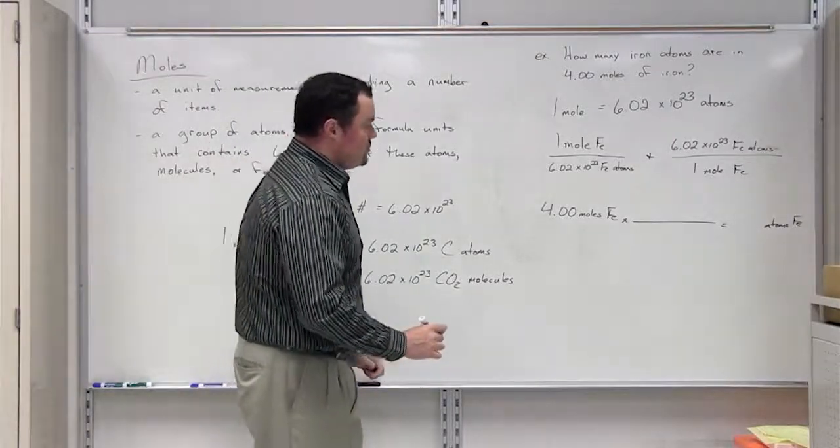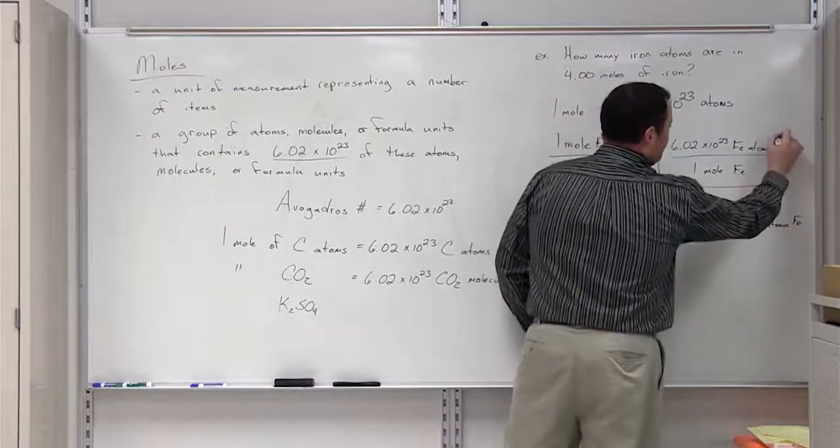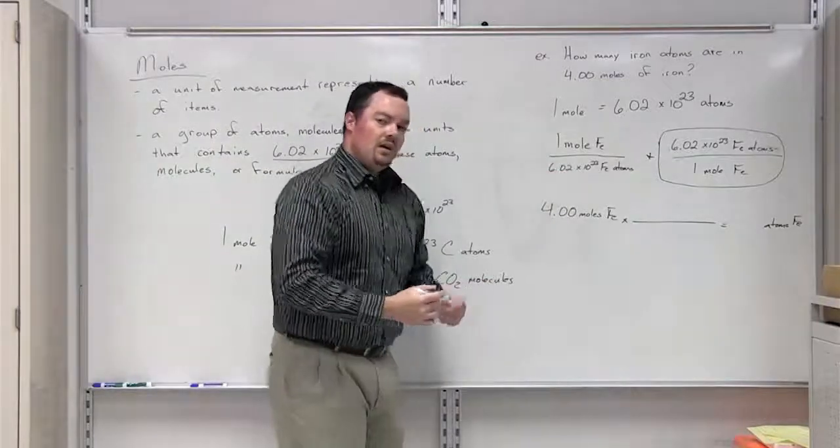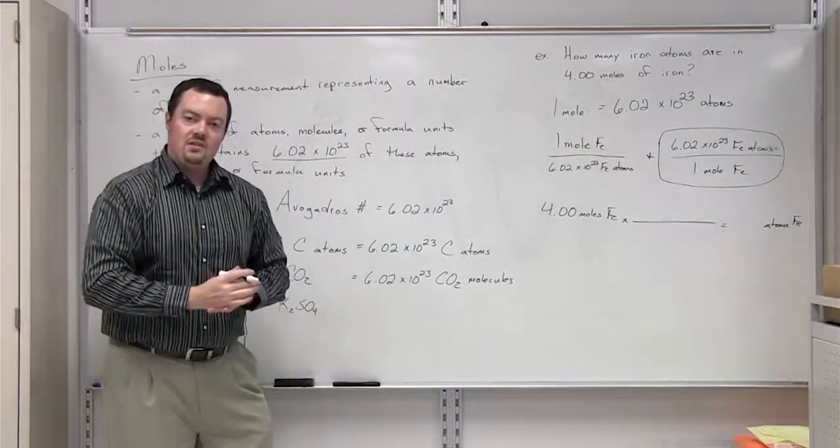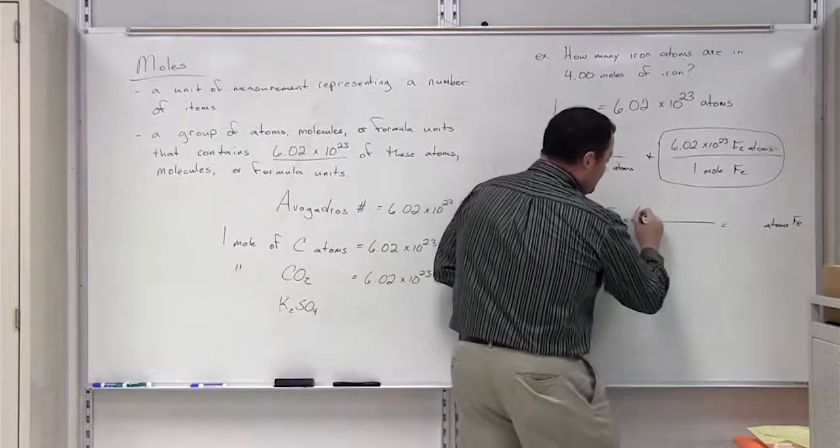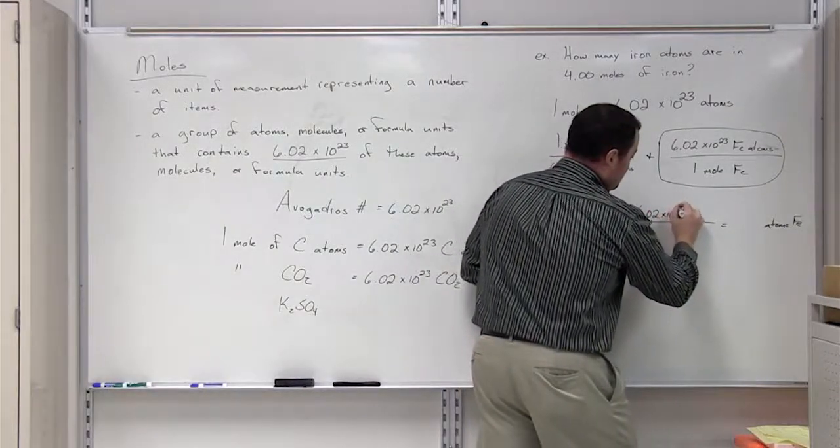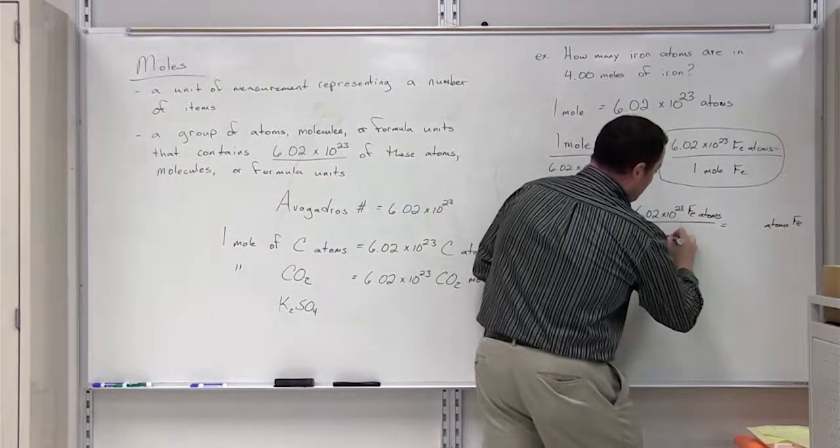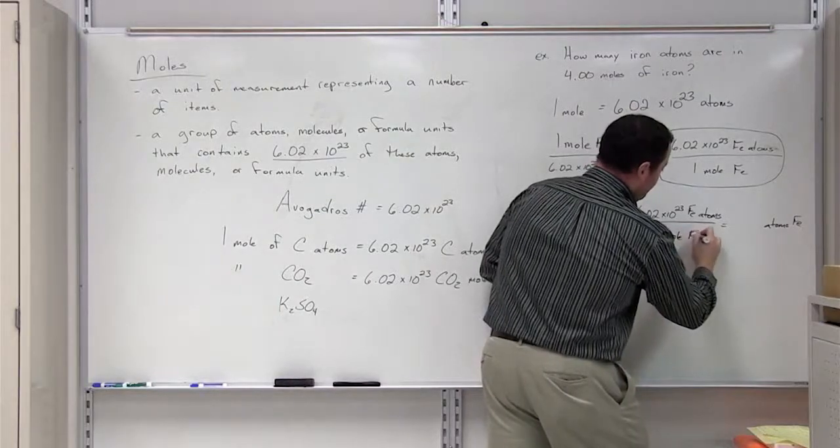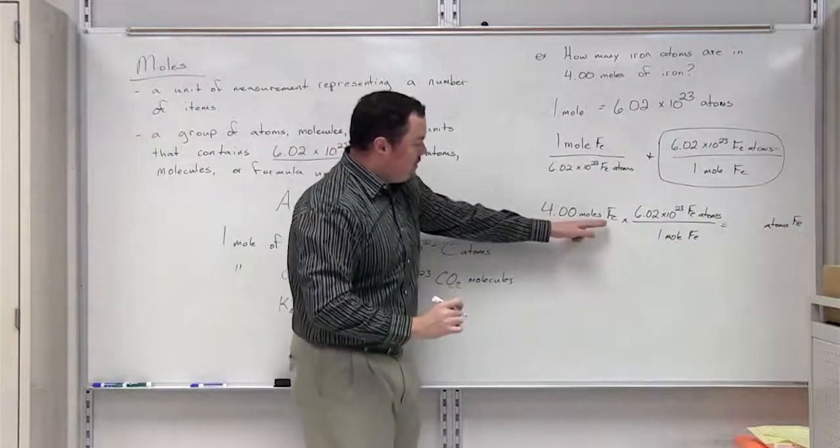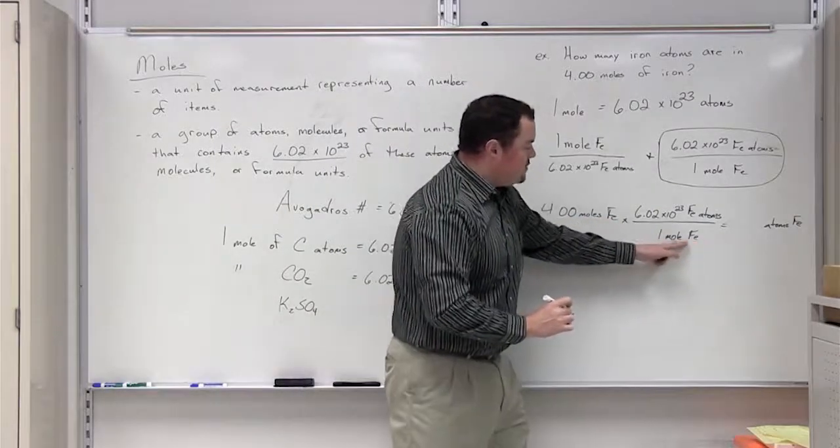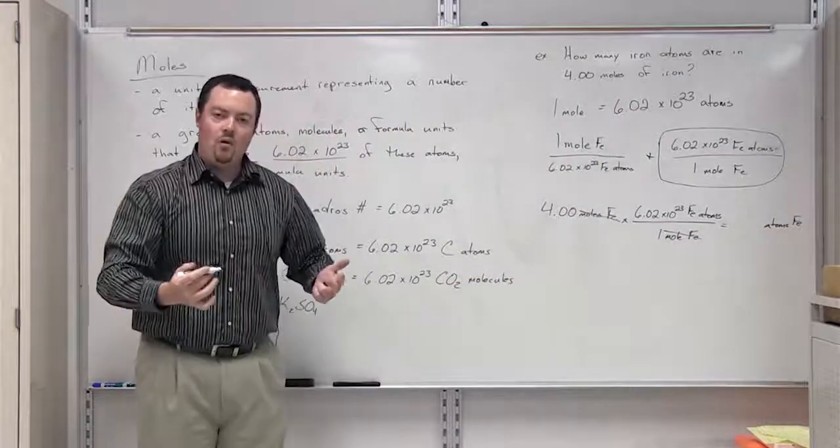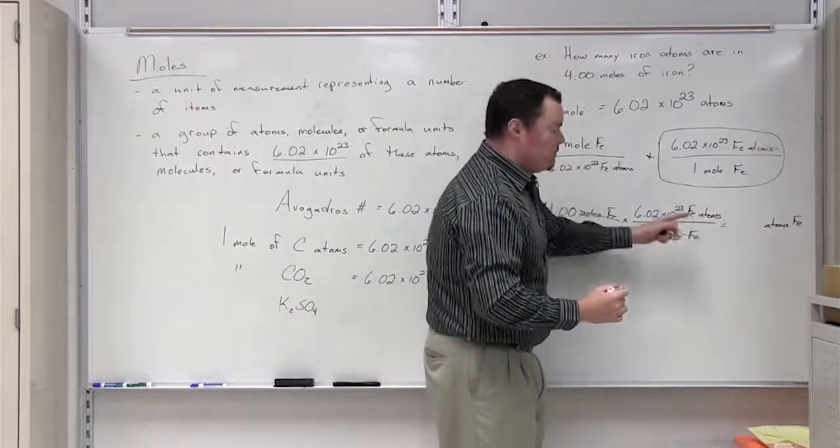The one that we are going to choose is this second one. Why do we choose this particular conversion factor over this one? It all has to do with making sure our units cancel out. Whenever we multiply 6.02 times 10 to the 23rd iron atoms over 1 mole of iron, what you see is going to happen is this unit of moles of iron and this unit of moles of iron will cancel out. Now what's the only unit we are left with? It's the number of atoms of iron.